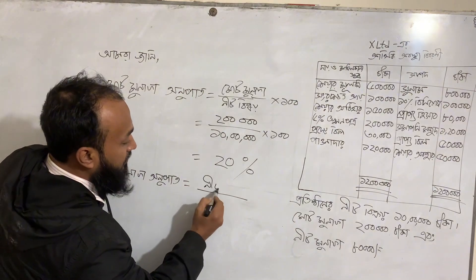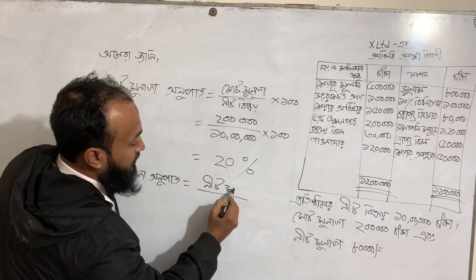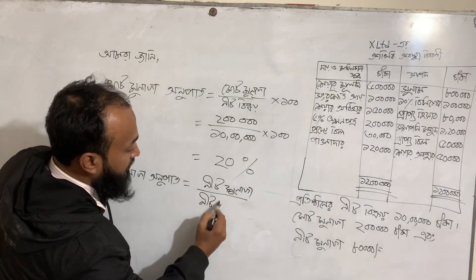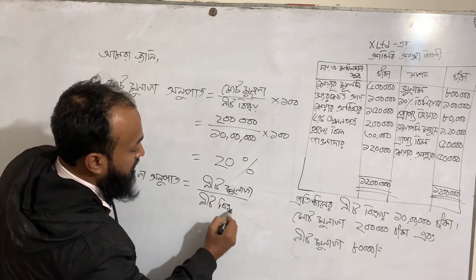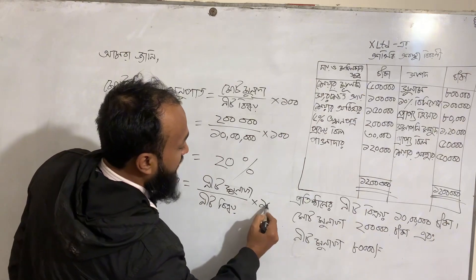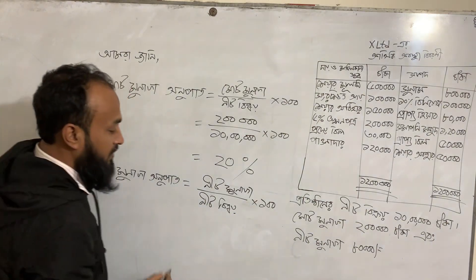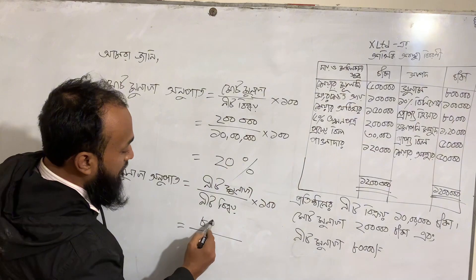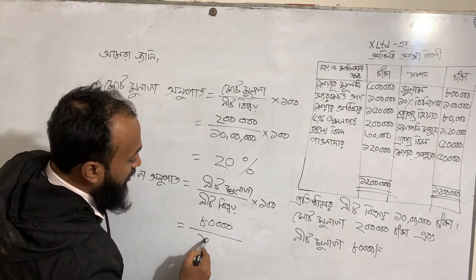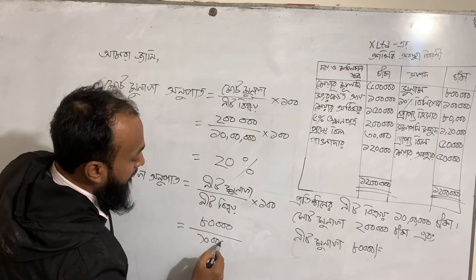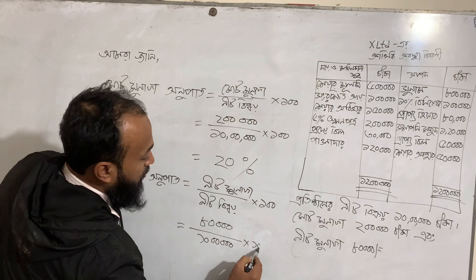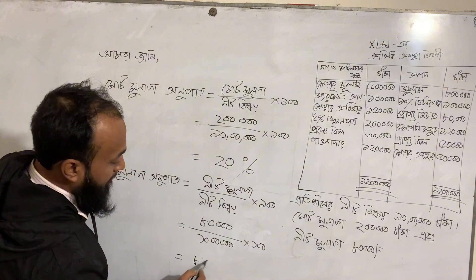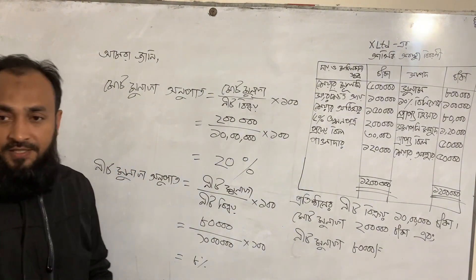I have to add the nit munafa. Divide by nit bikra. Multiply by 100. The result is 8% — so 10.08%. Okay?